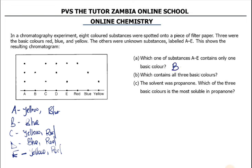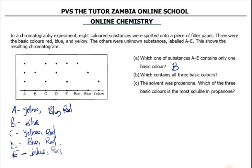Which one contains all three basic colors? Looking at A — A has yellow there, and A has blue there, and A also has red. We forgot that one from the beginning. So if you got that from the start, you were doing something right. A has got all three colors.